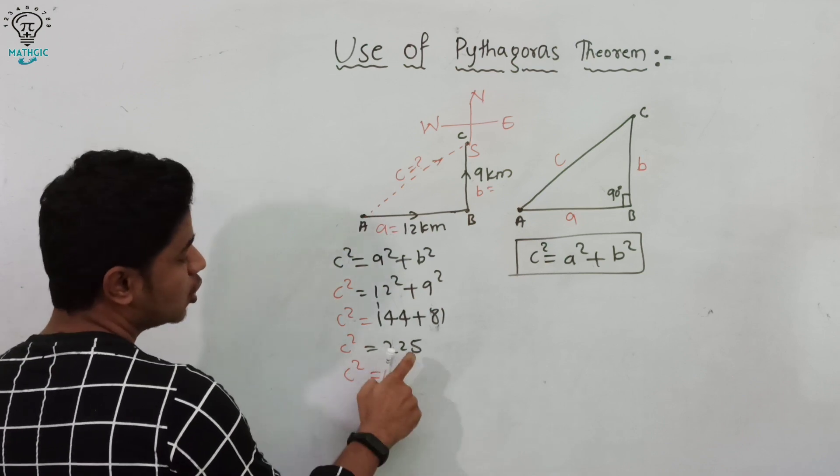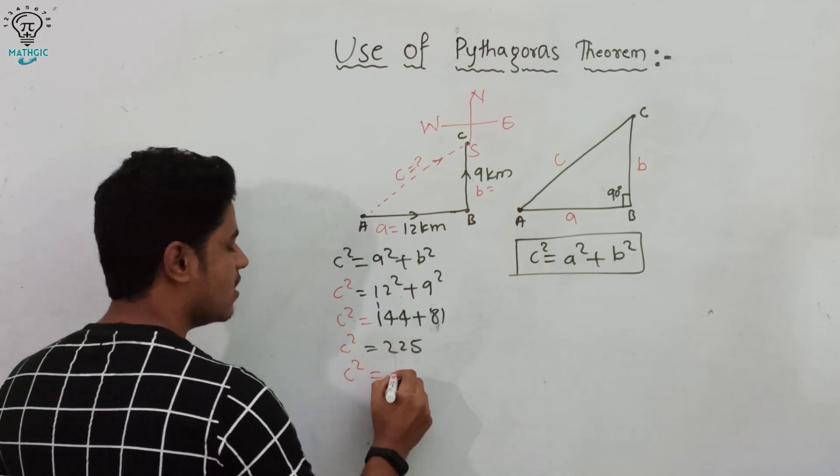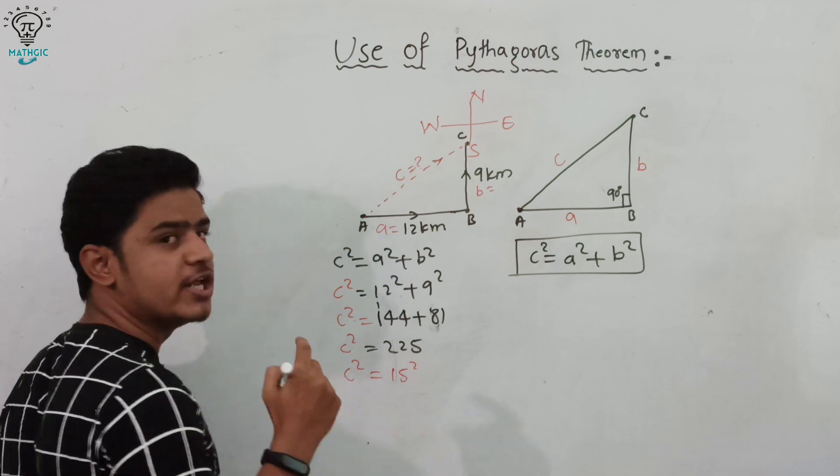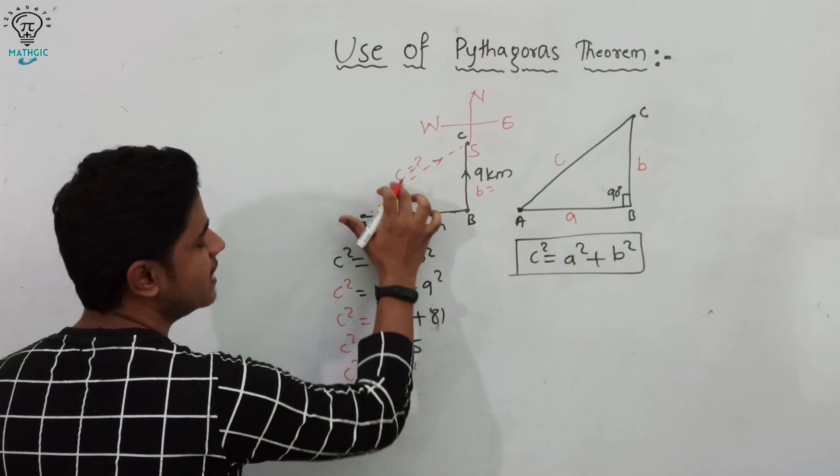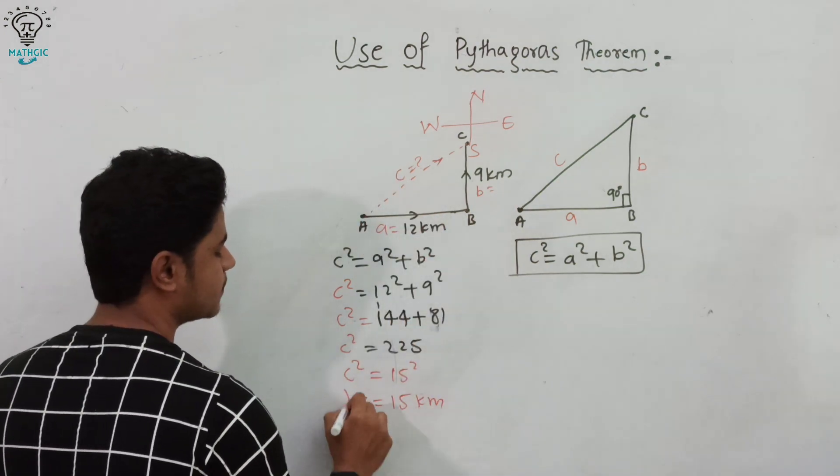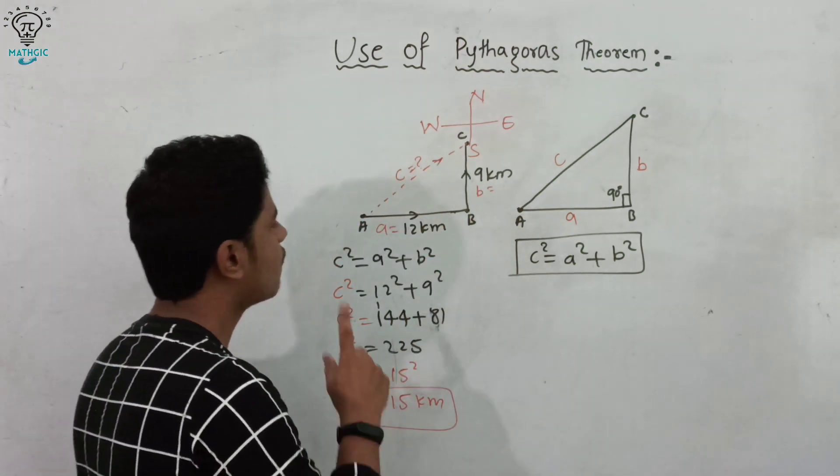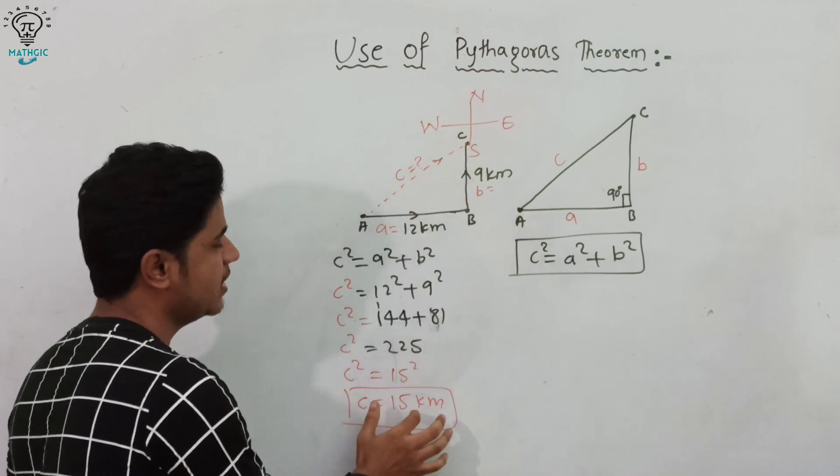c² = 225 can be written as 15 times 15, means 15². So c = 15, that is in kilometer. The distance from A to C is 15 kilometers.